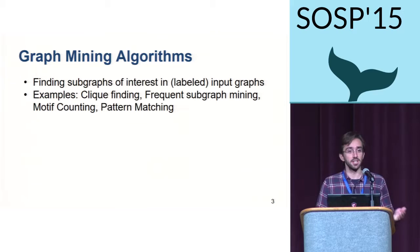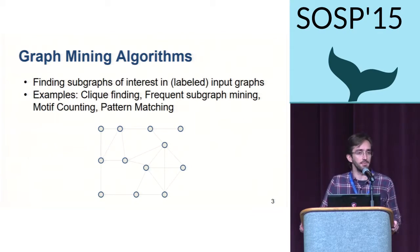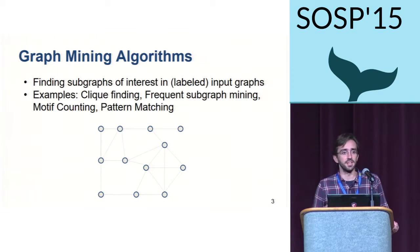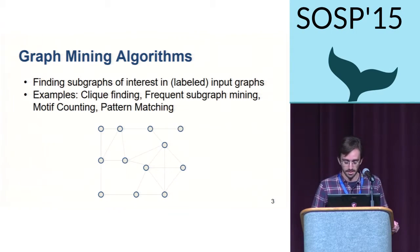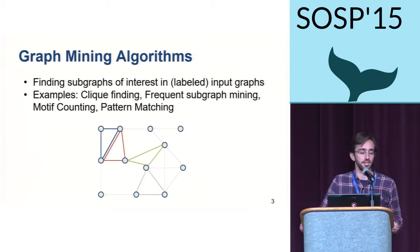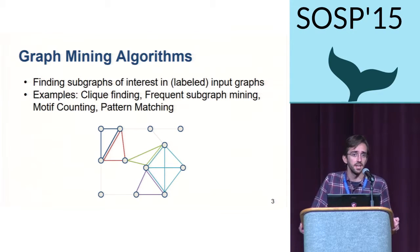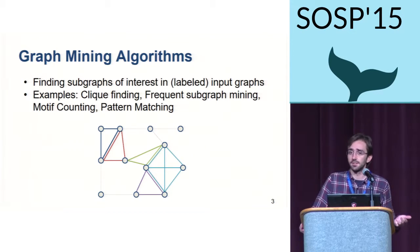For example, if we consider clique finding and give it a sample input graph, the clique finding algorithm would return as output a set of subgraphs with three or more vertices that are completely connected, as highlighted in colors here. Other examples of graph mining algorithms include frequent subgraph mining, motif counting, or pattern matching, such as is done in Neo4j.